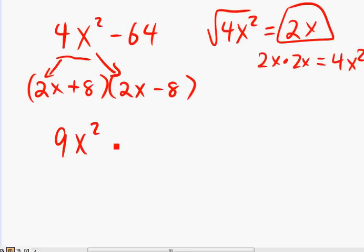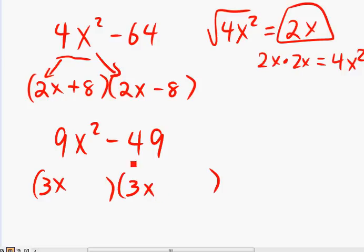9x squared minus 49. In this case, same as before. What's the square root of 9x squared? That is 3x. 3x. And square root of 49 is 7 and 7. Put a minus here, plus here. And there you go.